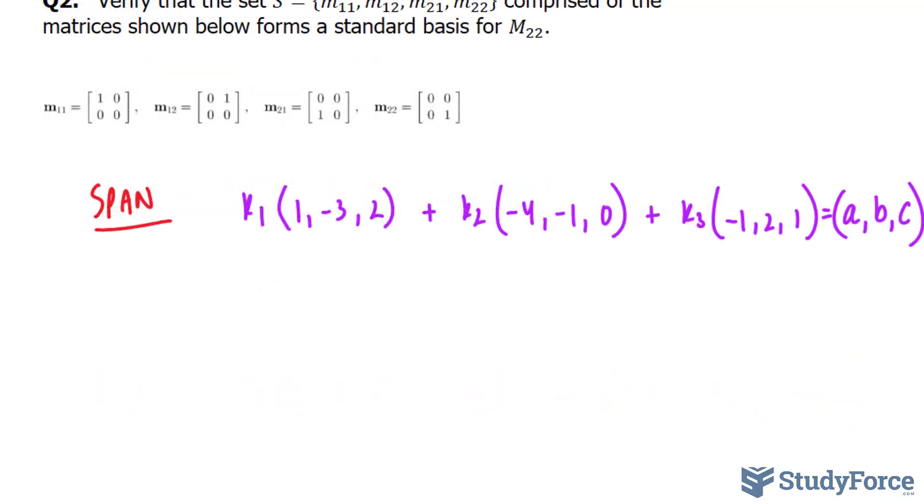Next, I'll create equations out of this. You should end up with three equations, because there are three components. The first equation will relate the x, the second will relate the y, and the third will relate the z. So the first equation will be k sub 1 times 1, k sub 2 times -4, so -4k sub 2, k sub 3 times -1, so -1k sub 3 is equal to a.